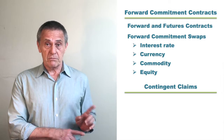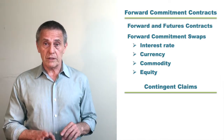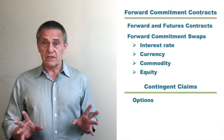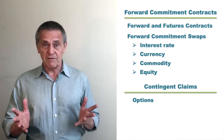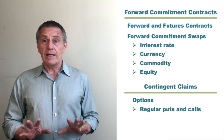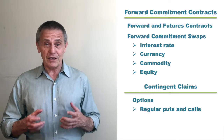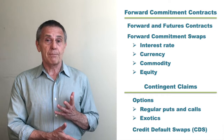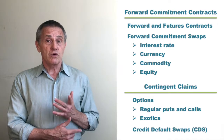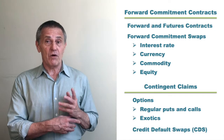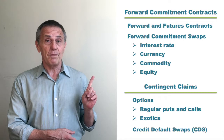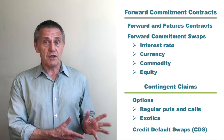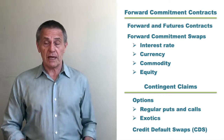Contingent claims? Well, two broad categories. Options — and that includes all types of options from the simplest, most straightforward plain vanilla put or call, as well as the more complex exotic options — as well as credit default swaps. So even though CDS have a word in common with the forward commitment swaps, credit default swaps are much more analogous to option contracts.